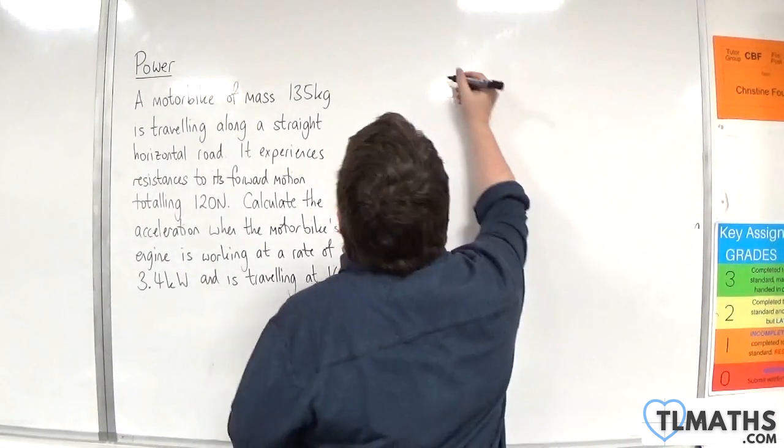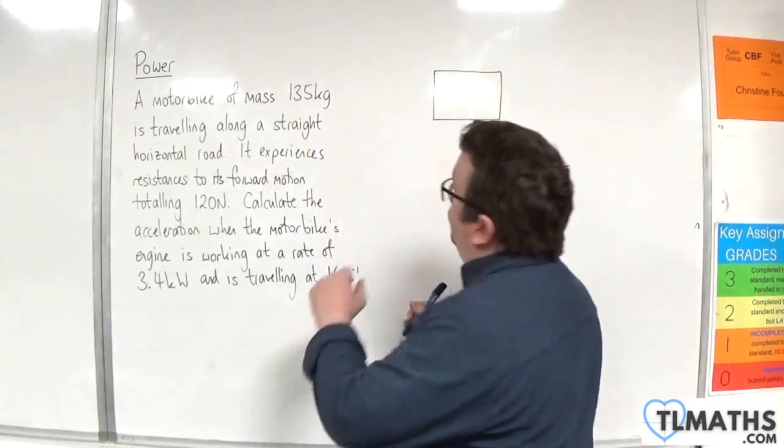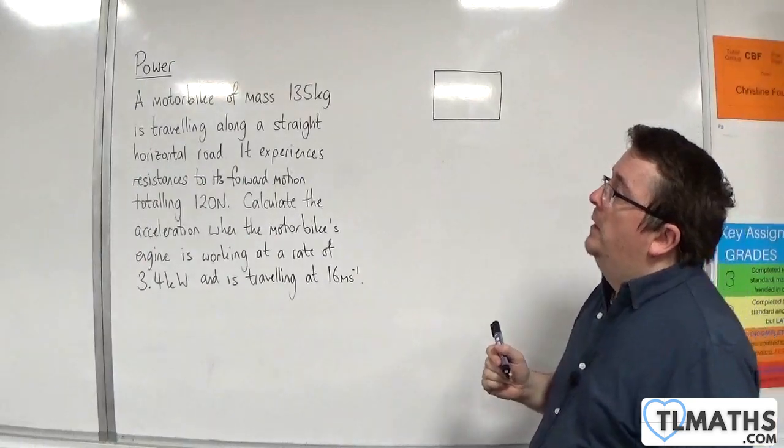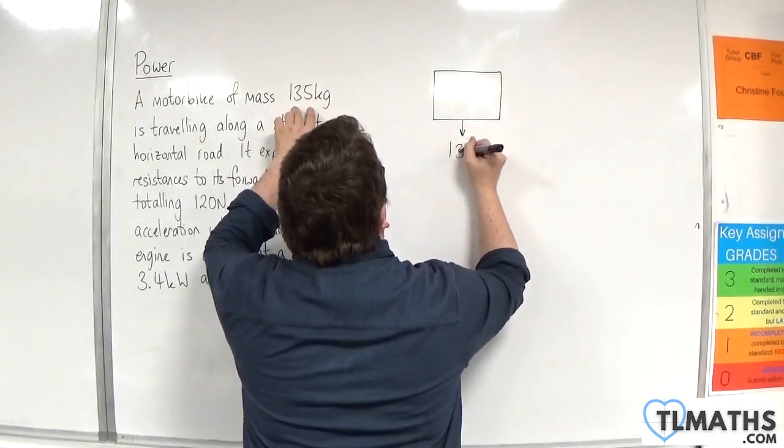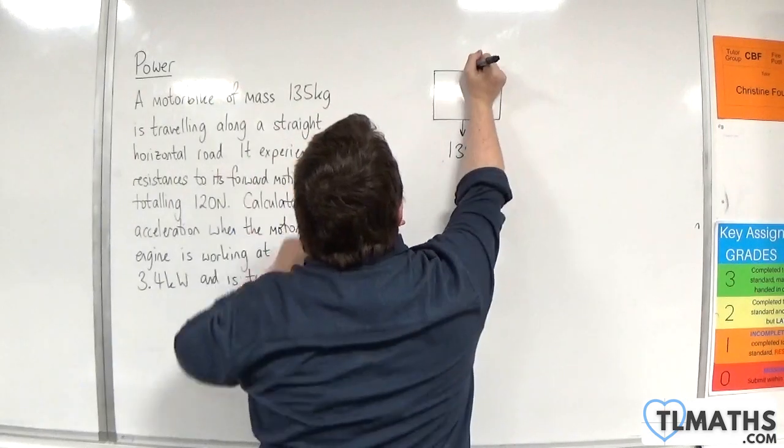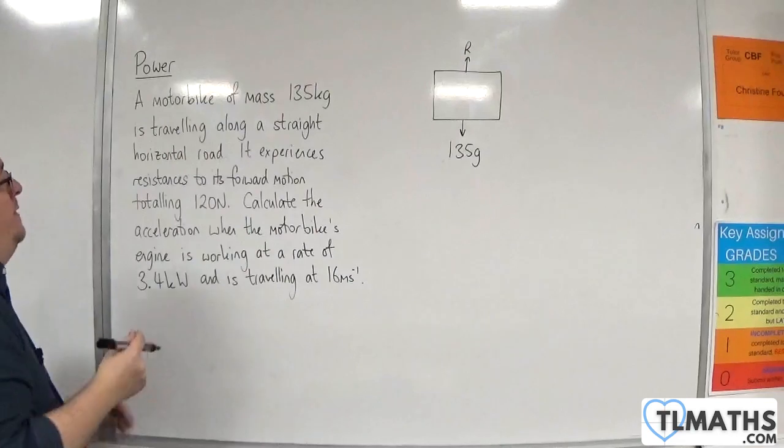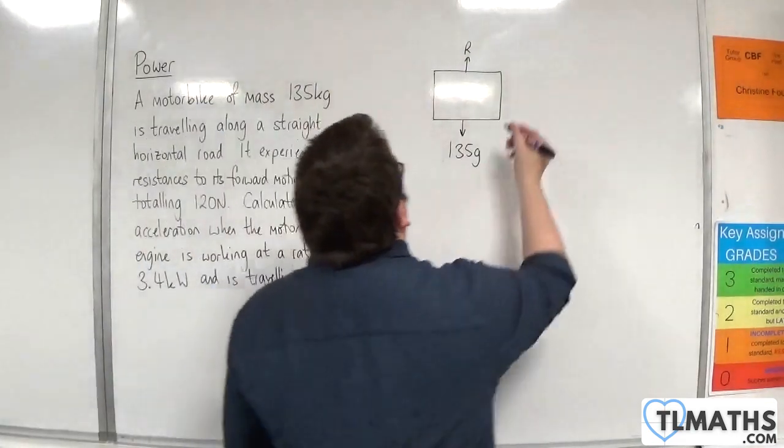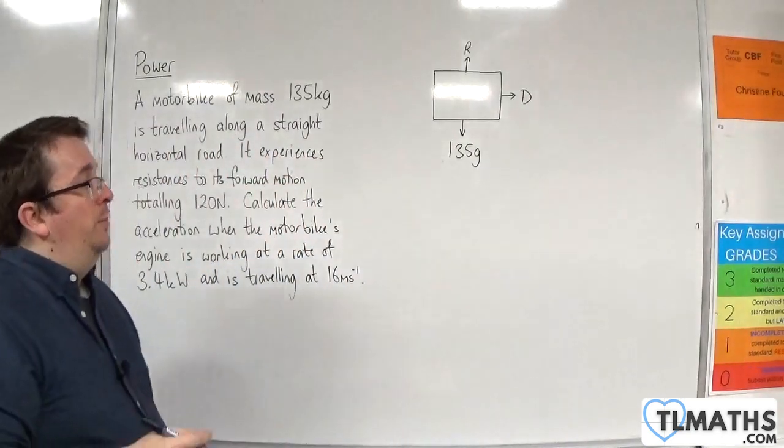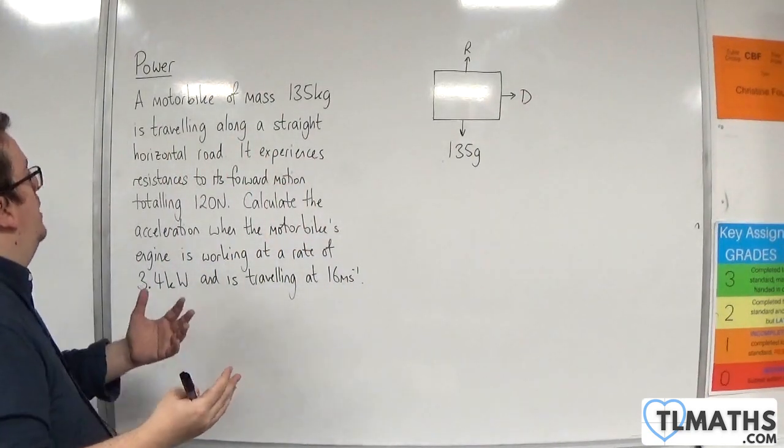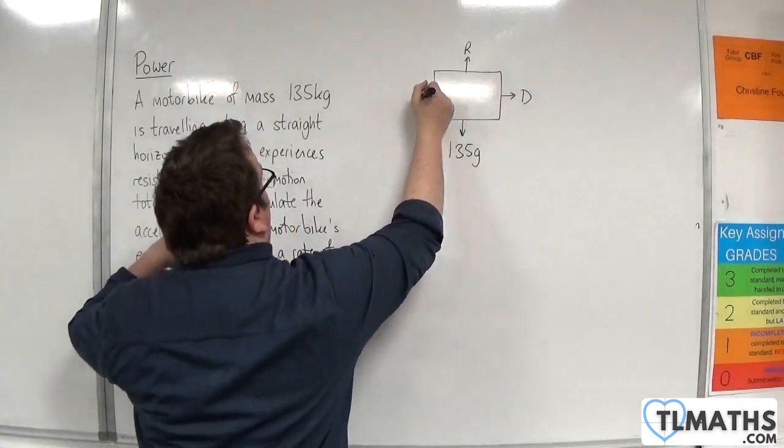So first of all draw yourself a diagram so you can visualise all the forces acting on the motorbike. Now it has a mass of 135 kilos so it has a weight of 135g. There will be a normal reaction force because it's in contact with the surface. There will be a driving force and I'm going to take to the right as positive. And there are resistances to its forward motion totalling 120 newtons. So 120 newtons to the left.